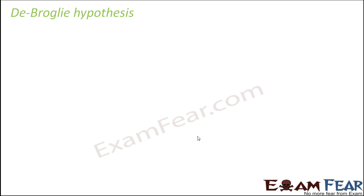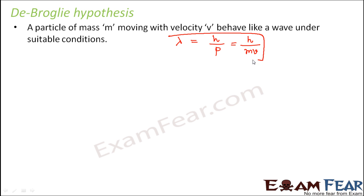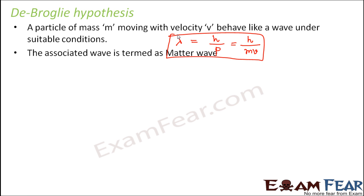Let us do a quick recap of De Broglie hypothesis. A particle of mass m moving with velocity v behaves like a wave under suitable conditions. We relate the wave nature with the particle nature by saying that the wavelength of this wave, lambda, is given by h by p, where p is the linear momentum, the product of mass and velocity. This associated wave is called the matter wave.